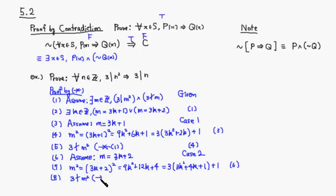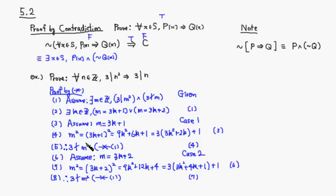Again, this is the same contradiction — it contradicts line 1. Therefore, in either case, we led to a contradiction. The first case led to a contradiction, and the second case led to a contradiction. So therefore, by proof by contradiction, the original statement is true. I hope that was clear.